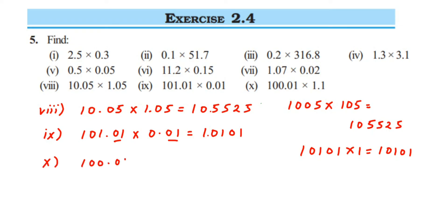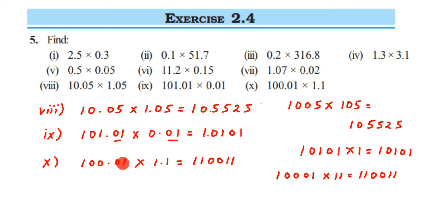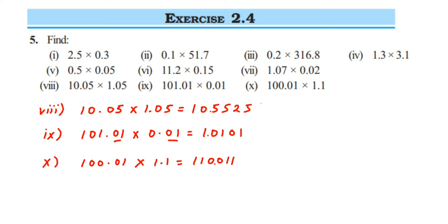The tenth question is 100.011 multiplied by 11. Multiplying 10001 and 11 gives the large number 110011. Placing the decimal: two digits after the decimal in the first number, one digit in the second, so total three digits. Counting three digits from the right — 1, 1, 0 — we place the decimal, giving 1100.11.